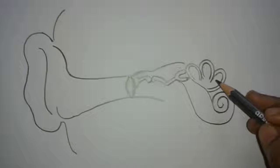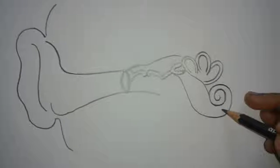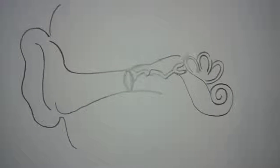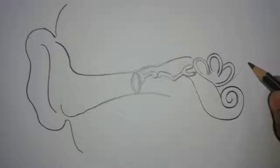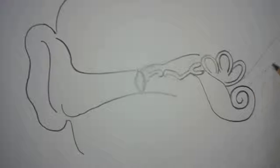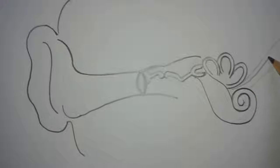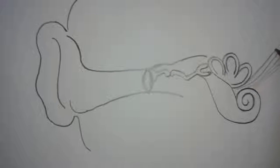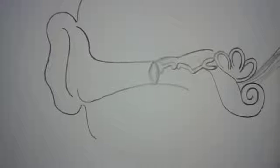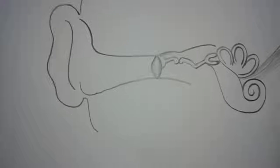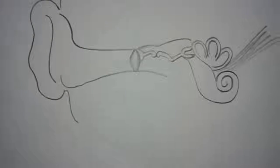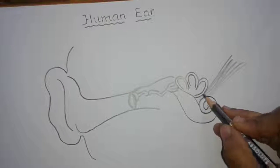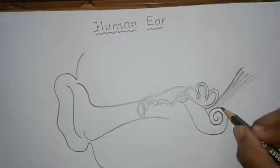The function of the utriculus and the sacculus is they maintain balance of the body. Now from here draw the auditory nerve. Cochlea contains the receptors which join together to form the auditory nerve.